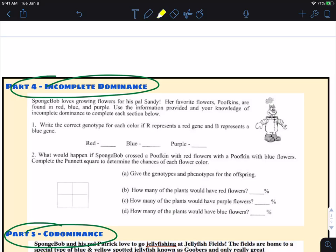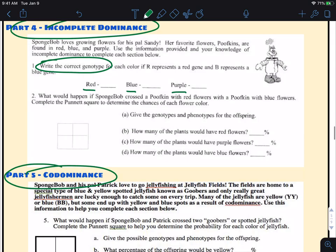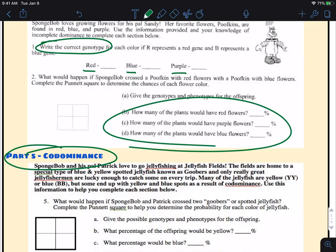So let's just kind of go through a couple of things here. We have SpongeBob loves growing flowers for his pal Sandy. Her favorite flowers are Poofkins, and they are found in red, blue, and purple. And as long as we understand that purple is a mixture of the colors red and blue. So what you guys are going to do is you're going to first identify the genotypes for red, for blue, red, blue, and purple. And then you're going to attempt to solve this Punnett square to answer the probability of having all those different ones.